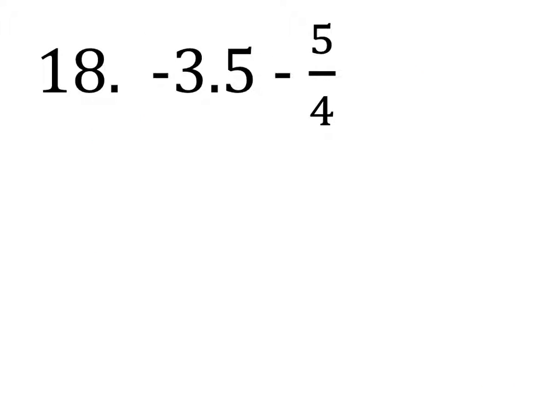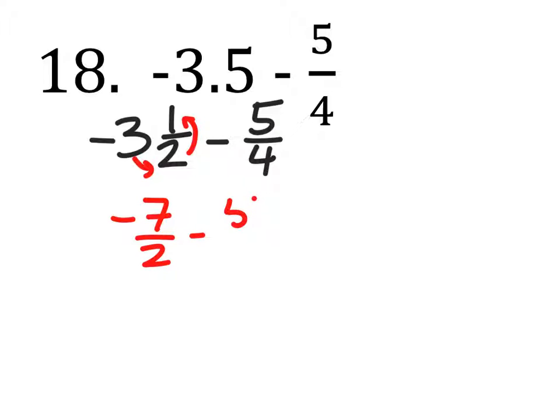Number 18 gives us a decimal and a fraction. So this negative 3.5 as a mixed number is 3 and a half minus 5 fourths. Some of you guys would turn that one half into five tenths. That's okay. Now we need improper fractions. So 3 times 2 plus the 1 is a negative 7 half minus 5 fourths.